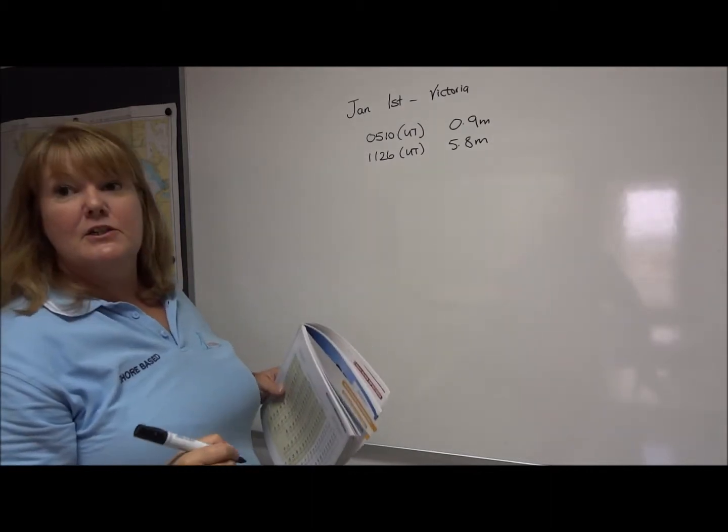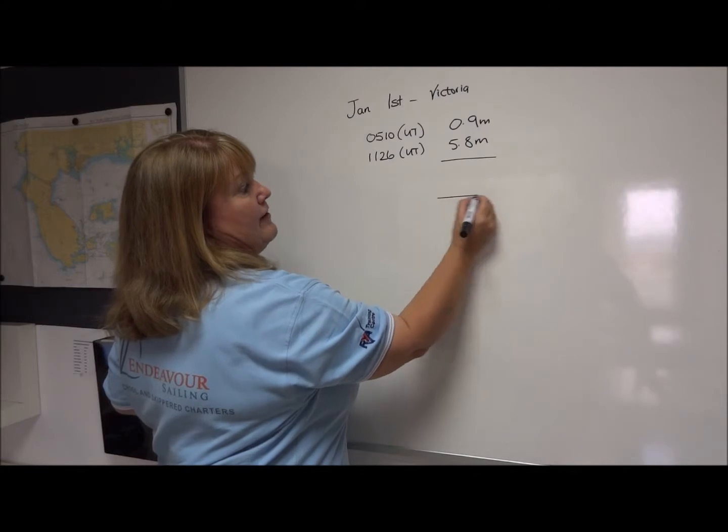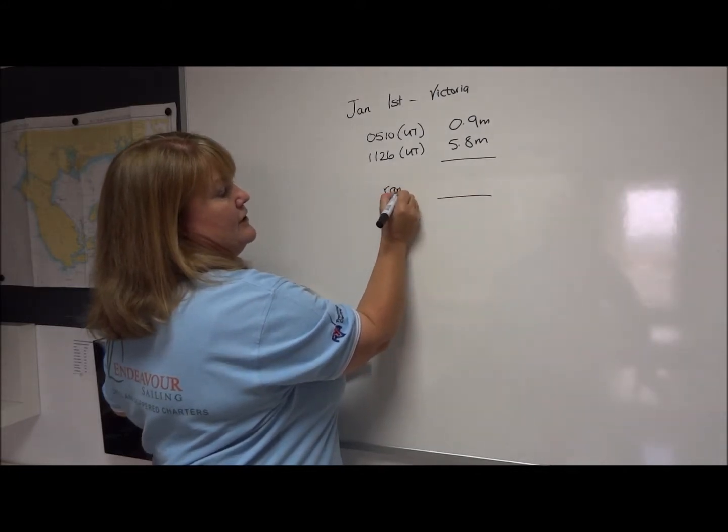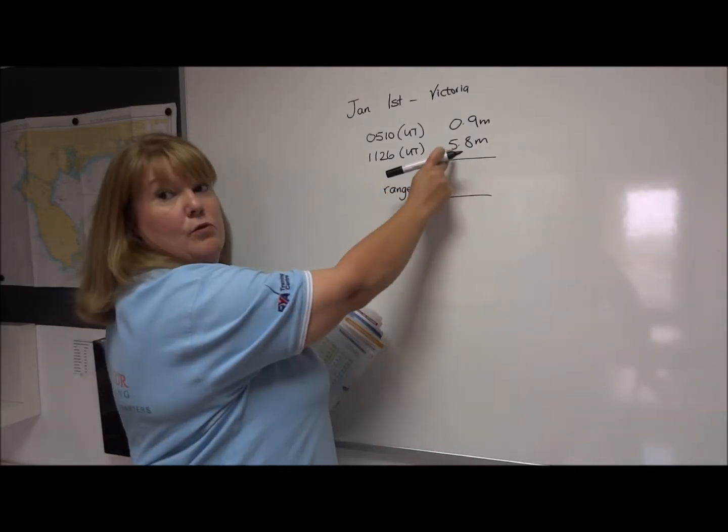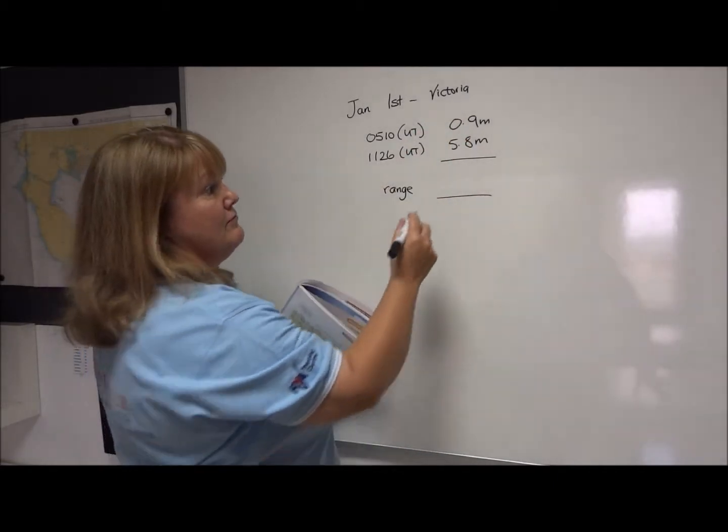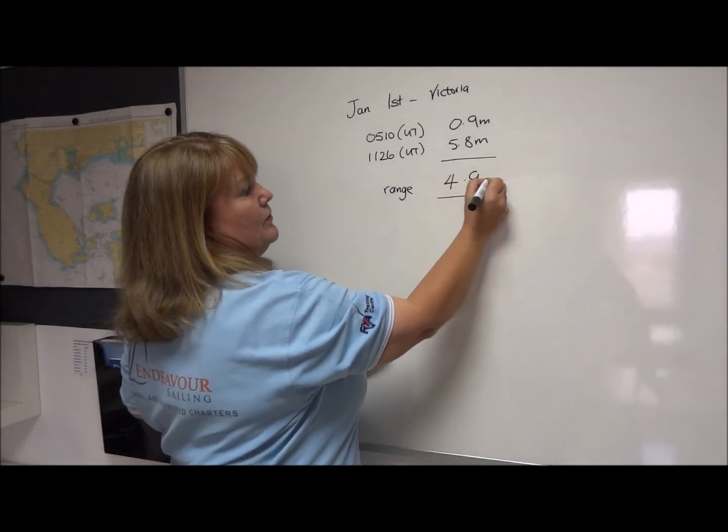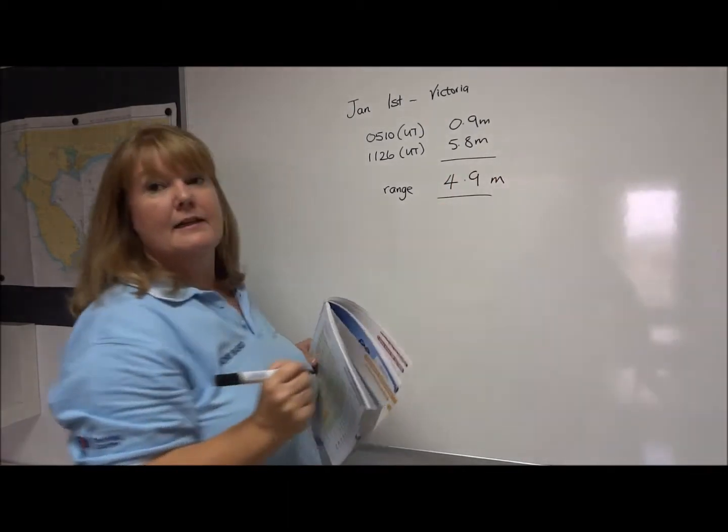So the next step we need to do is to calculate the range. And the range is the difference between high water and low water. So the range today is 4.9 metres.